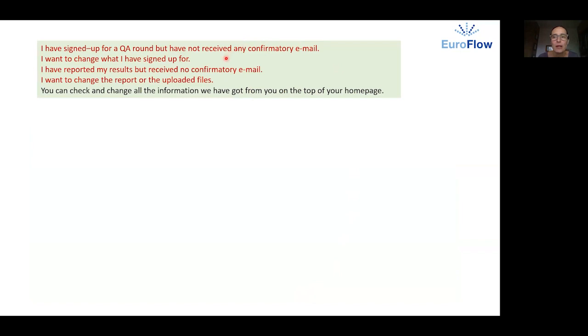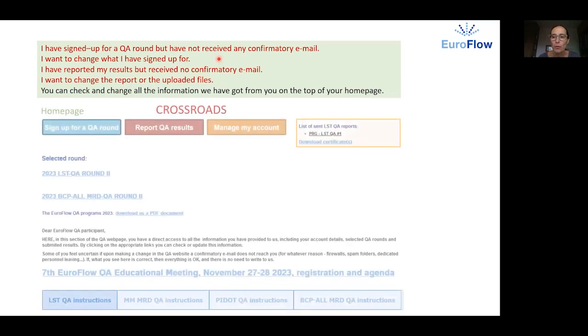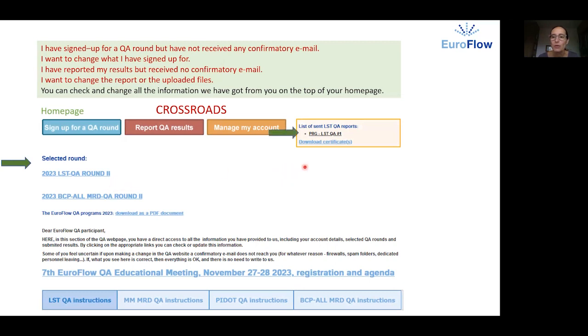Here are some questions related to the inherent problems of online communication such as the confirmatory emails not coming, uncertainty of what you have actually signed up for, what results you have submitted, where you have saved your certificate or your account details. We believe that the solution to this communication noise is the top of your home page. Here you can see the QA rounds you have signed up for, the reports you have sent us. You can also use these links and change these as long as the schedule permits it. You can download your certificates from the current and the past year and you can manage your account from here. So the information you see here is the information we have and we work with.